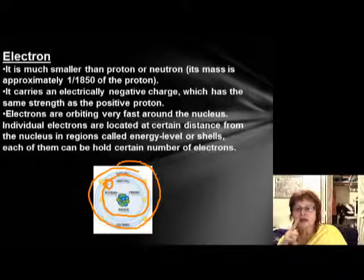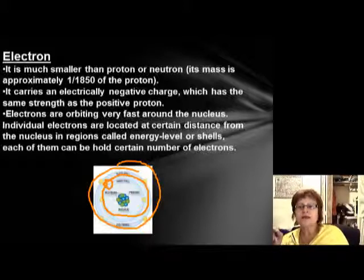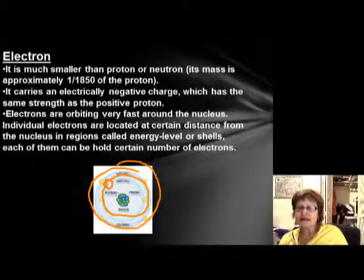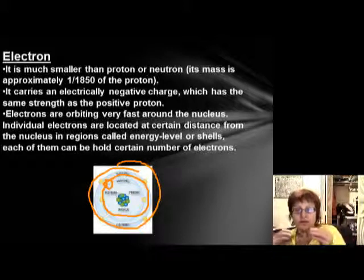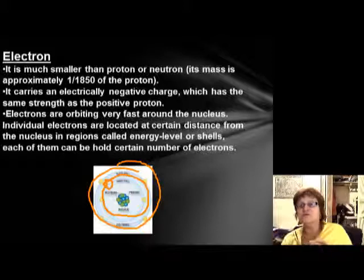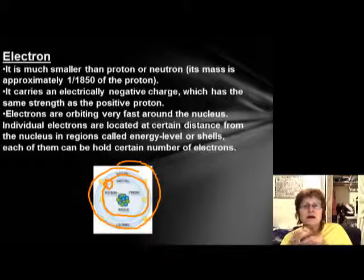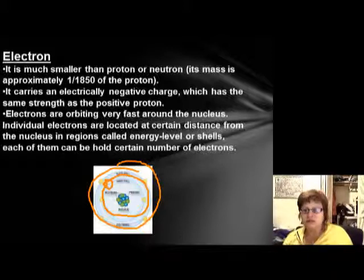However, electrons have one important property: they have one negative charge. This negative chemical charge is equal to the positive charge of the proton. So when you have the same number of protons and electrons in an element, it is neutral from the outside. Something has to happen for the atoms to become chemically charged.